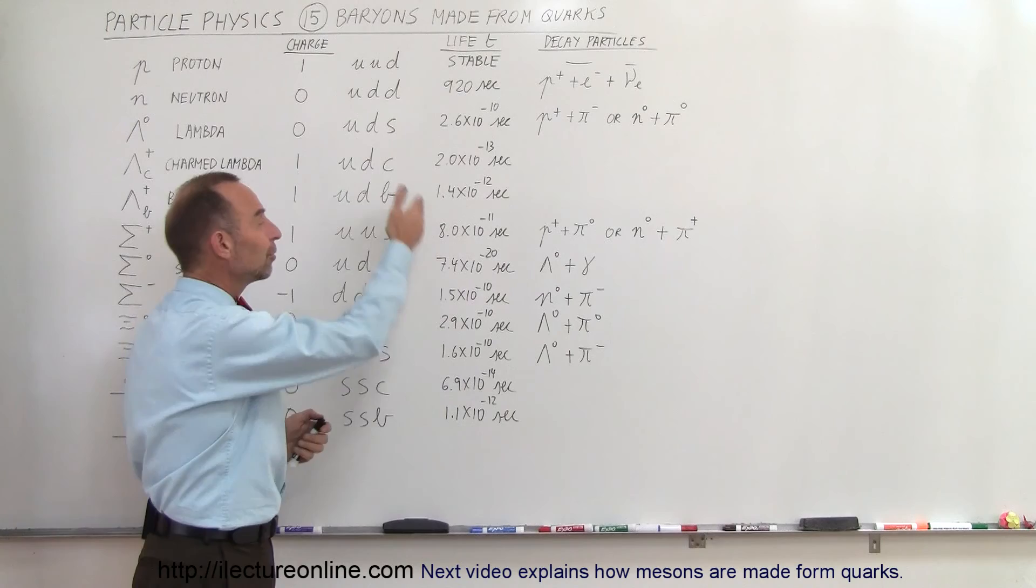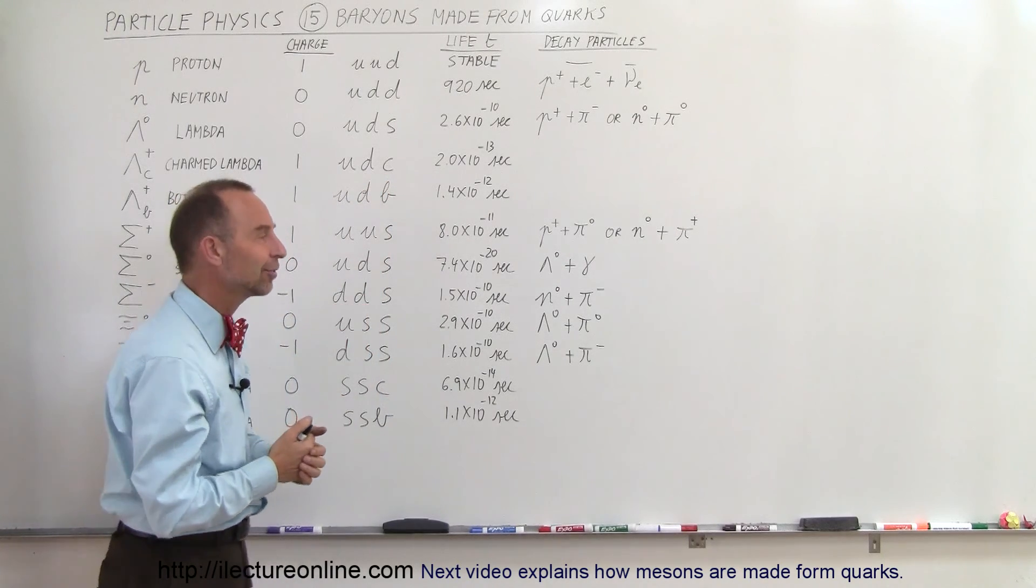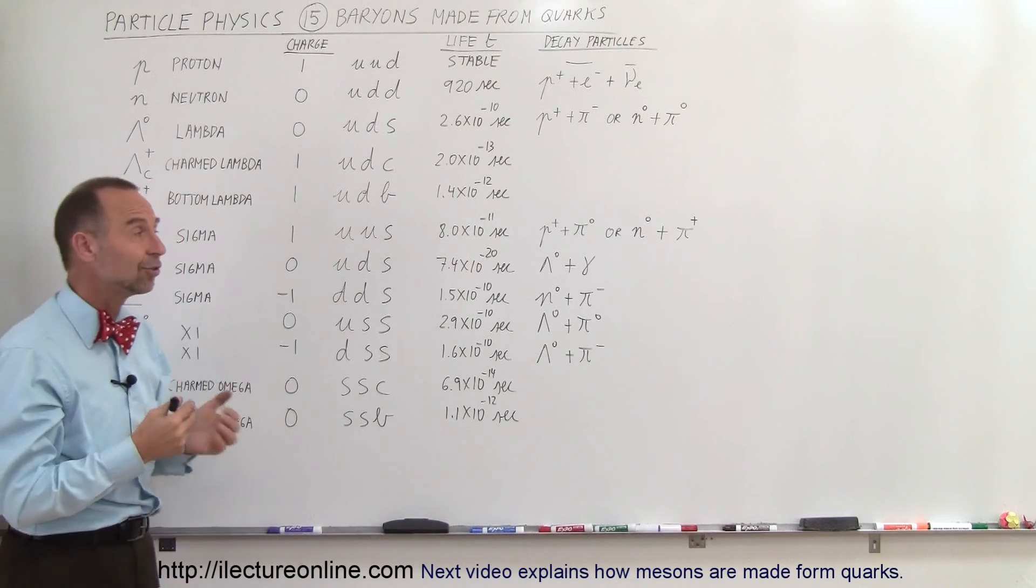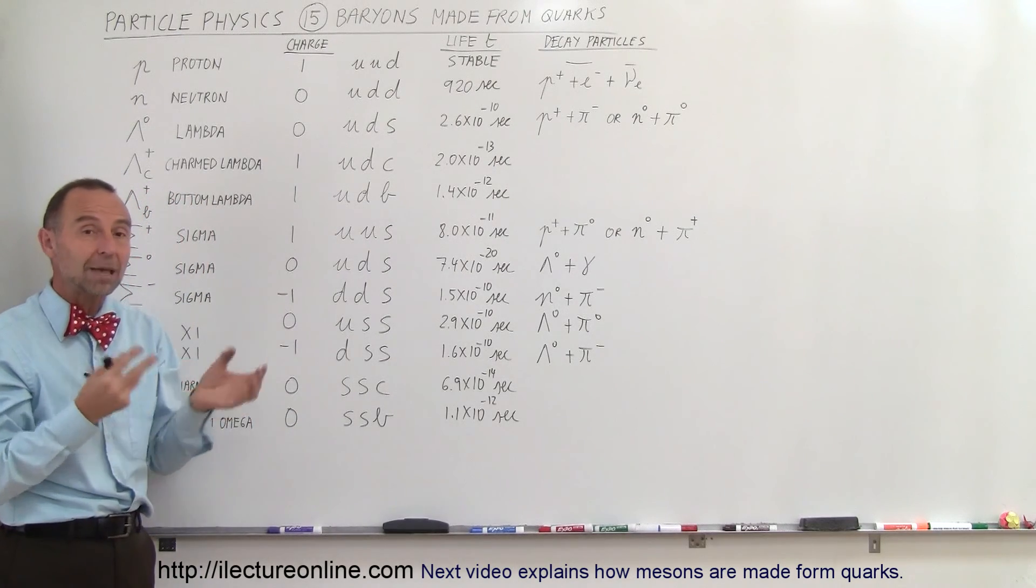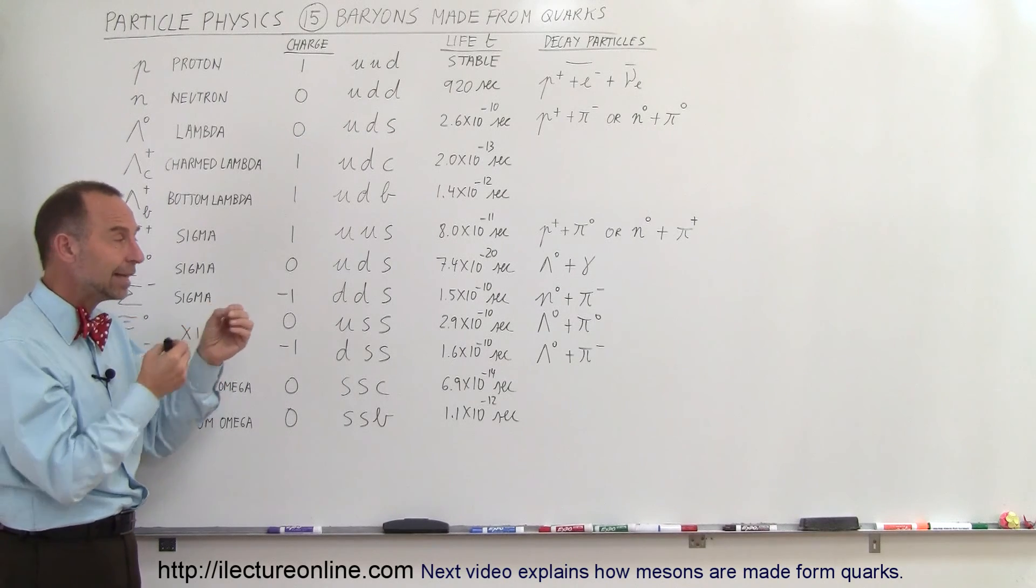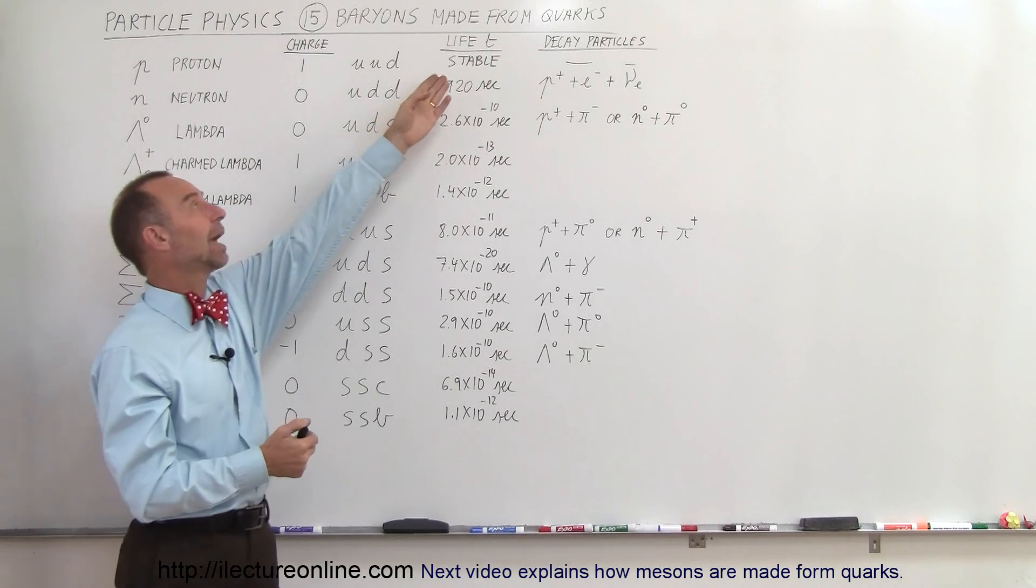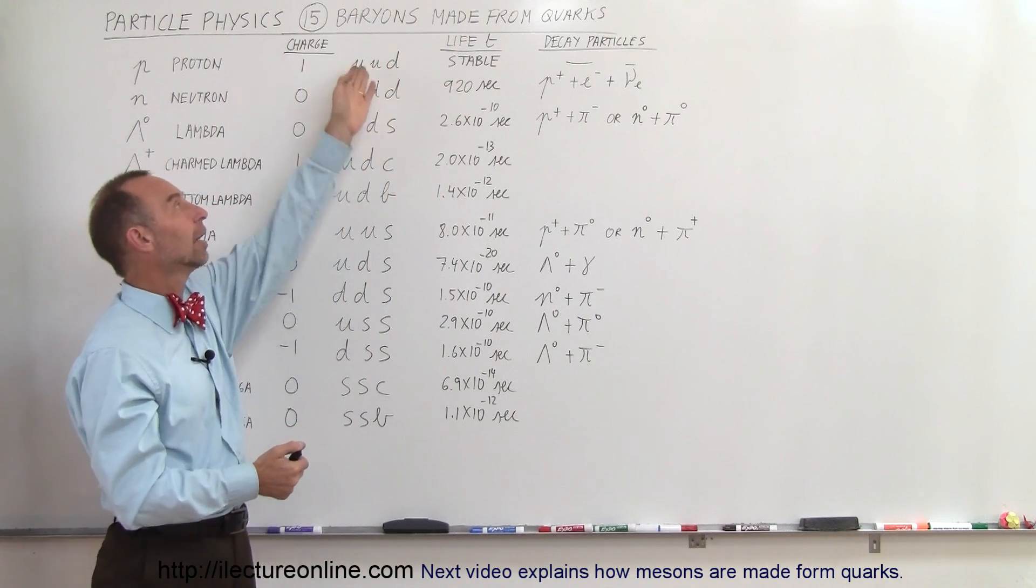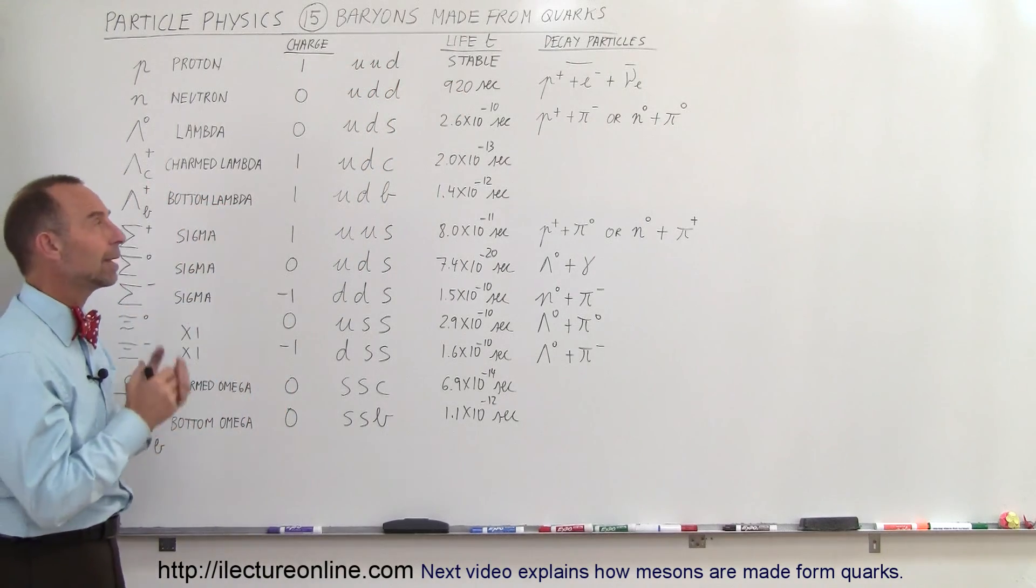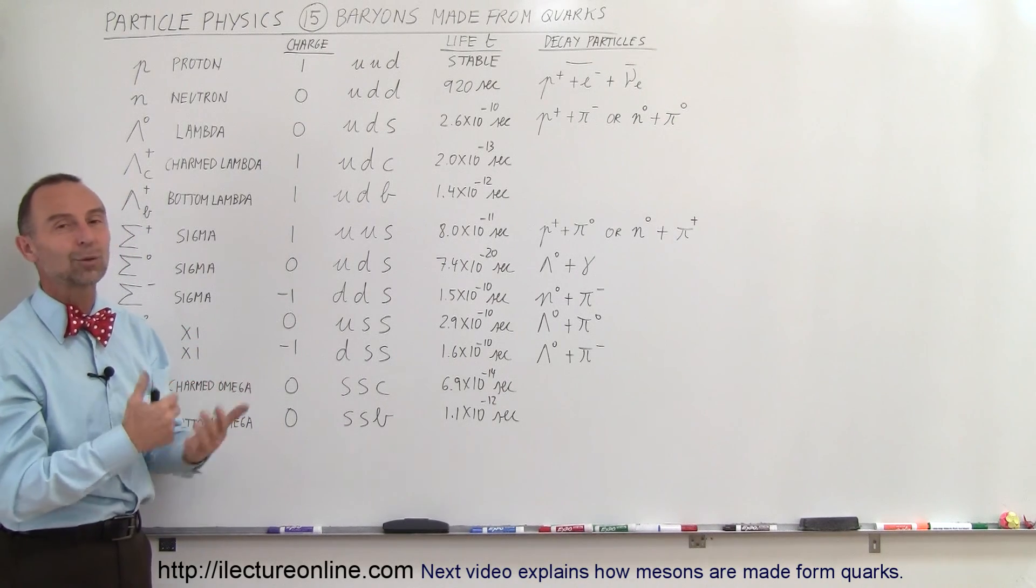So hopefully again that gives you an idea that quarks are there to make baryons, particles made up of three quarks, and that usually the interactive force between them make them very unstable until we get to a state where we have a proton or a neutron under these conditions being made by those quarks. And hopefully that will help you understand again what quarks are all about.